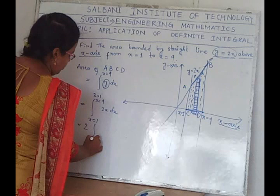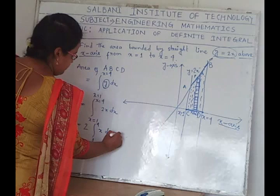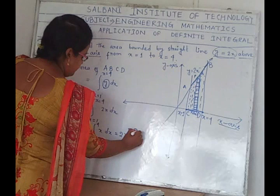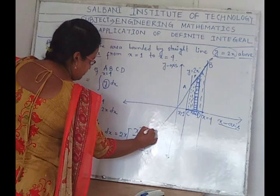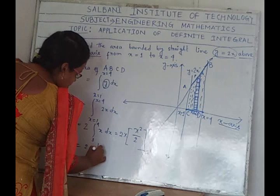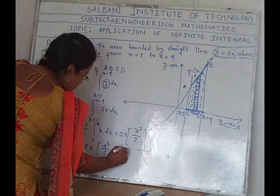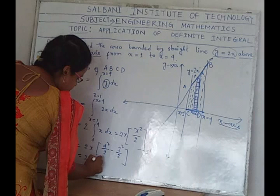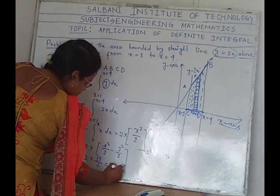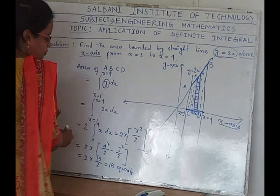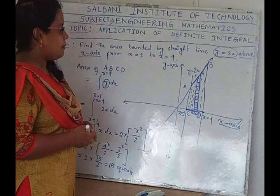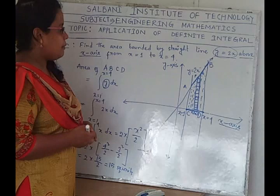Since 2 is a constant, we only integrate the x part. So the area of the bounded region ABCD is 15 square units. Hope I have clearly explained this problem. Thank you everyone.